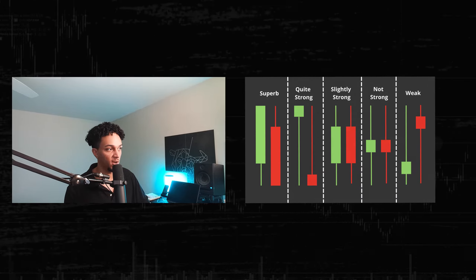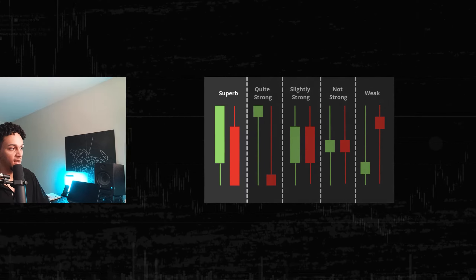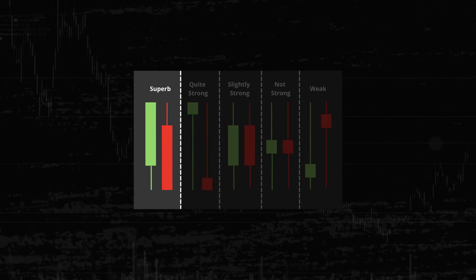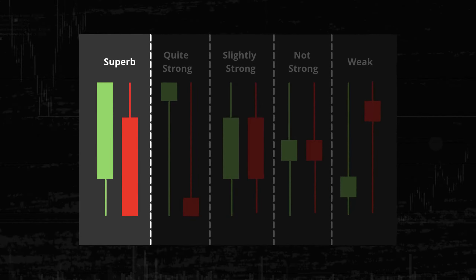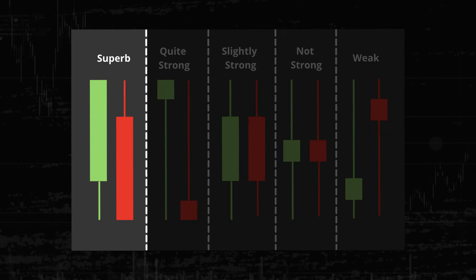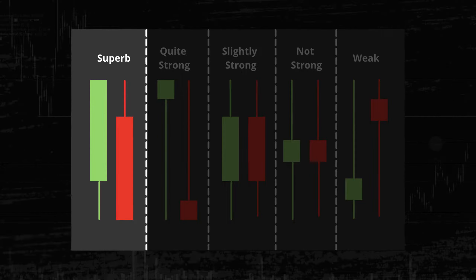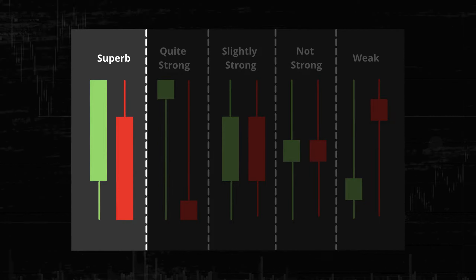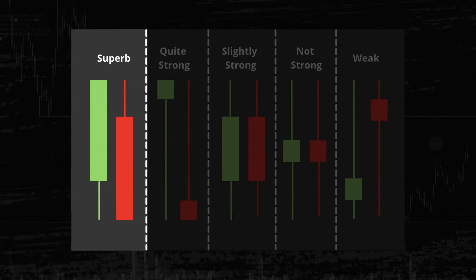The first example of a very strong candle is one that opens down at the lows and closes at the high of the candle. Why is this strong? Because at one point in time, sellers had the candle down here — in the case of a green candle, sellers had price all the way down, making it a red candle. But buyers were able to drive price all the way up through the open, push it past, and this candle just kept getting bigger and bigger, closing at the very high of the candle with no upper wick.